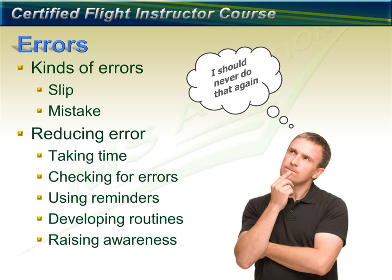Mistakes occur when a person plans to do the wrong thing and is successful — mistakes are errors of thought. Our goal should be to reduce error. It is impossible to eliminate error, but we must minimize the number and scope of errors. Tools to do that include: taking time, checking for errors, using reminders, developing routines, and raising awareness.